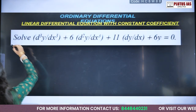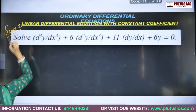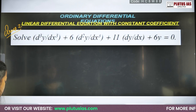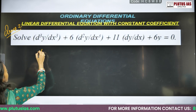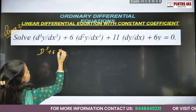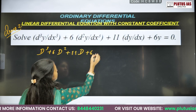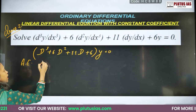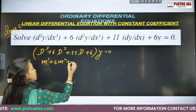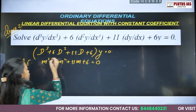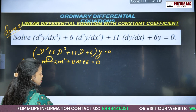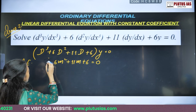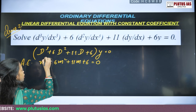Let's do one more question. Question number two: (D³ plus 6D² plus 11D plus 6)y equals 0. The auxiliary equation is m³ plus 6m² plus 11m plus 6 equals 0. Here you need to find three roots, which is still a challenge since there's no direct formula for a cubic. We use the hit and trial method. Since all signs are positive, don't try positive numbers — they can't cancel out to give zero.